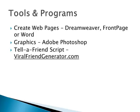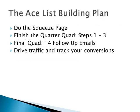The ACE List Building Plan involves: completing the squeeze page, finishing the funnel Steps 1 through 3, writing the 14 follow-up emails, and driving traffic while tracking your conversions. To put everything into actionable steps, we will summarize it all in 5 simple steps so you can start taking action right away. Step 1: Refer to the bonus that you received together with this ACE List Building course as a reference. It will give you a good idea of what the ACE list building system looks like overall when you put it together.